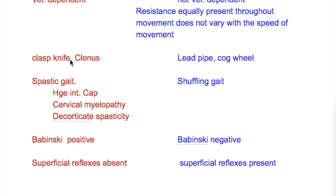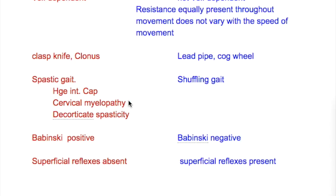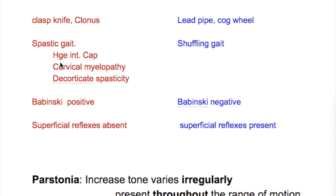Examples of pyramidal disorders include clasp-knife rigidity and clonus, whereas examples of extrapyramidal disorders include lead-pipe or cogwheel rigidity, as seen in Parkinson's disease. In pyramidal disorders there is a spastic gait, due to hemorrhage in the posterior limb of the internal capsule, cervical myelopathy, or decorticate spasticity.